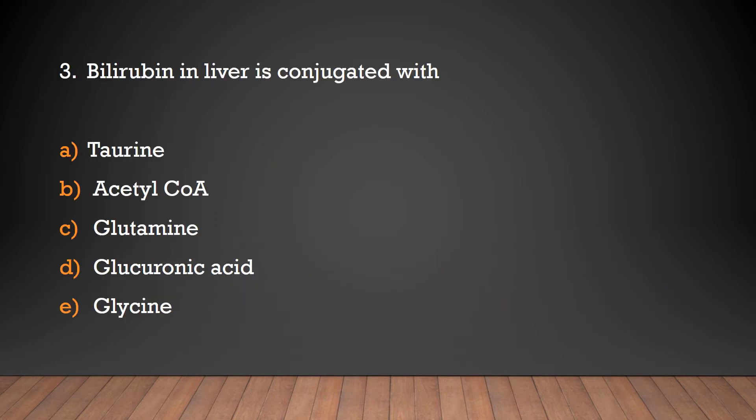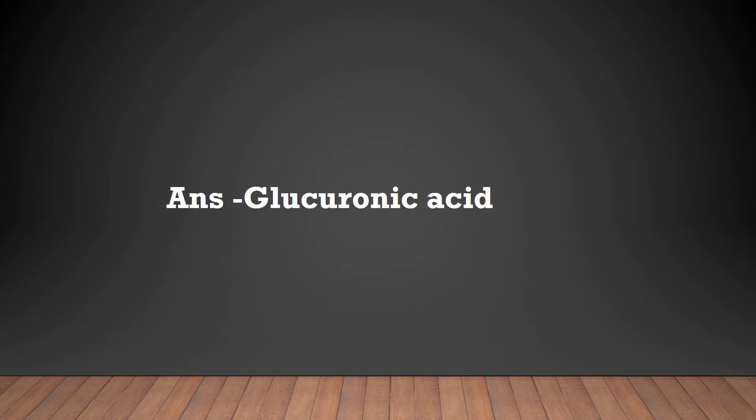Bilirubin in the liver is conjugated with: taurine, acetyl-CoA, glutamine, glucuronic acid, or glycine? The answer is glucuronic acid. Bilirubin present in the liver is conjugated with glucuronic acid.